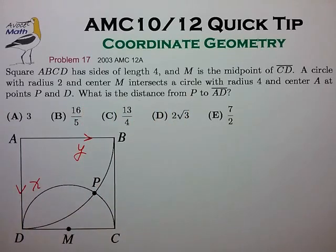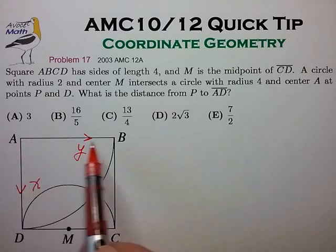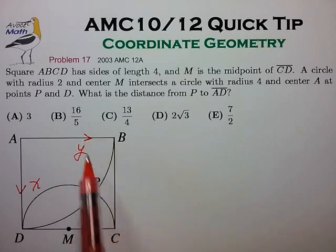Now to solve this with coordinate geometry, we'll have to choose our coordinate axes. I like to choose coordinate axes that keep most items in the first quadrant, that is positive X and Y. So let's choose side AD to be our positive X axis, and side AB to be our positive Y axis.